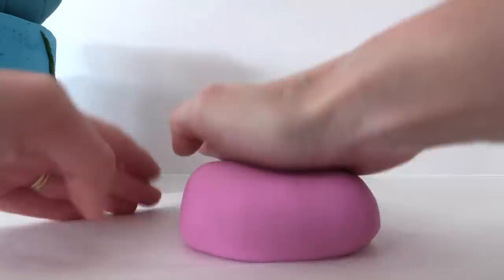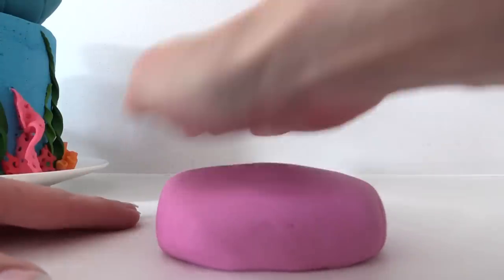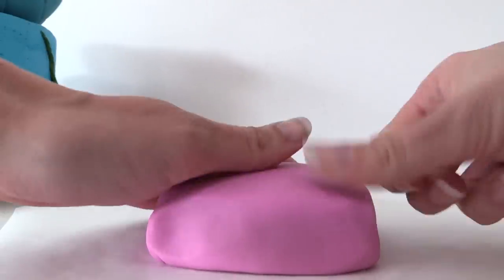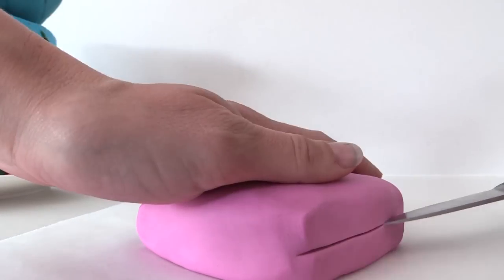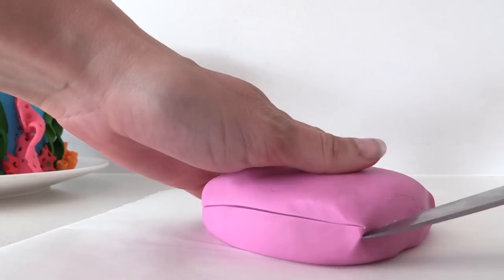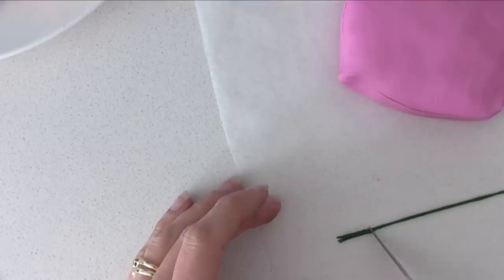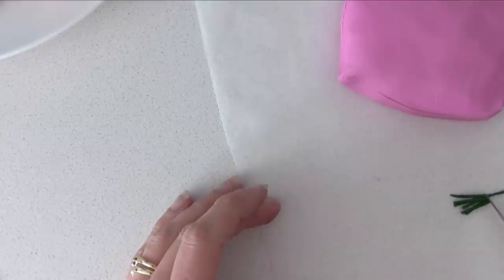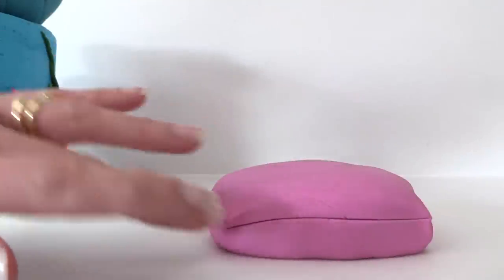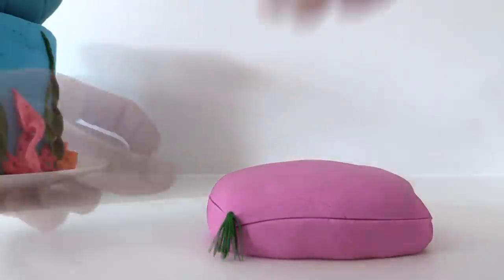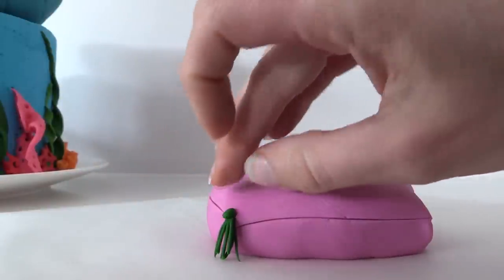To make the pillow, take a ball of pink fondant and shape it into a square. Pinch each of the corners to make them pointy. Take a knife and run a line around the middle for the center seam. Roll a super thin snake of green and cut it into equal length little bits. Squeeze them together at the top and add them onto the corner of the pillow using water to make it stick. Add a little ball of green on top to finish that off.